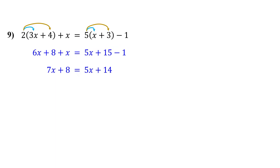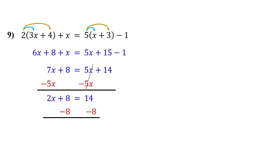Next, collect the variables on one side of the equation. Collect them on the left by subtracting 5x from both sides. 7x minus 5x gives us 2x. On the right, these cancel out, leaving 14. Now it is just a two-step equation. So next, isolate 2x by subtracting 8 from both sides. The 8s cancel out, leaving 2x. 14 minus 8 equals 6. Finally, get x by itself by dividing both sides by 2. This gives us x equals 3.